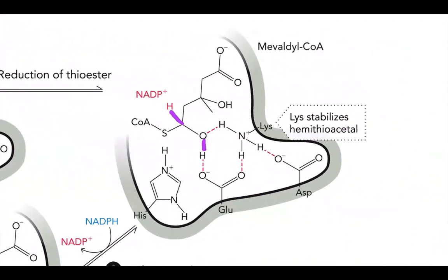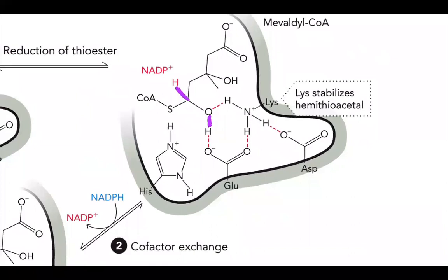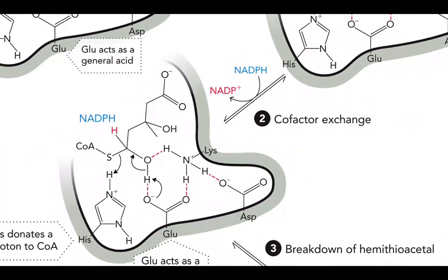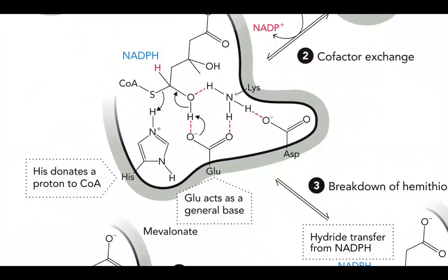Now we have an oxyanion transition state with our molecule. Our lysine, which is positively charged, is going to stabilize this intermediate form. Now we have a stabilized intermediate. We're going to kick out the NADP⁺ and then bring in another NADPH. In this second step, our glutamate is now going to act as a general base — it's going to pick up this hydrogen. At the same time, His is going to donate a proton to CoA.